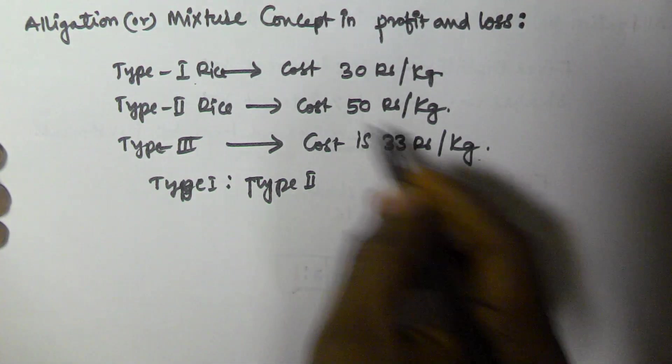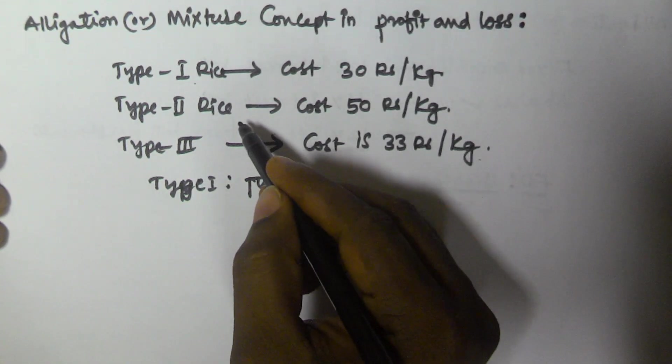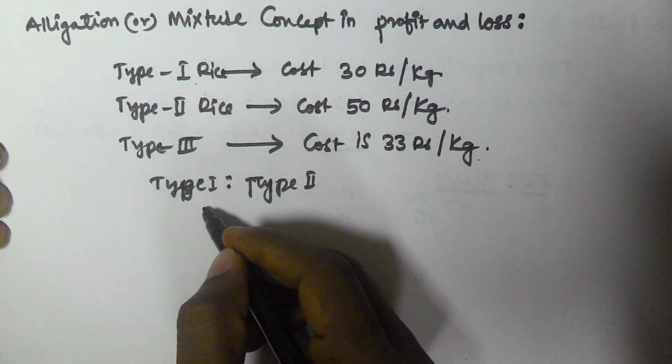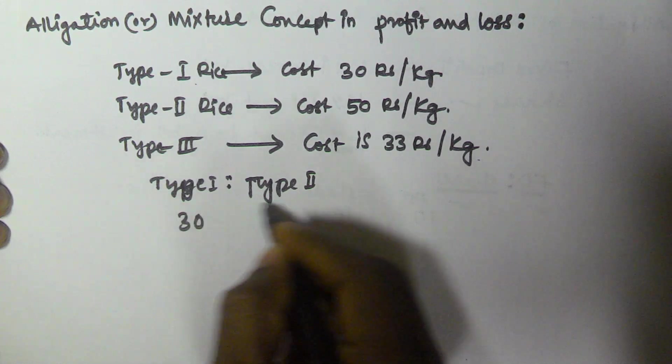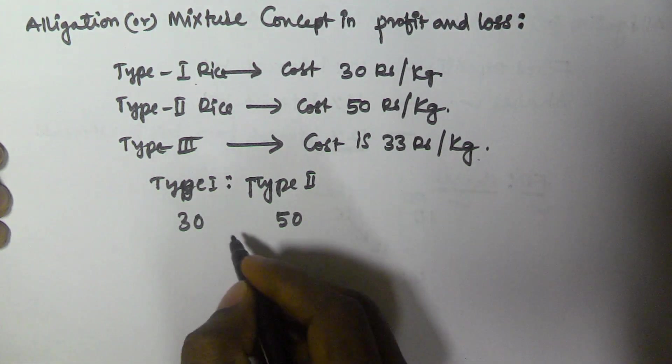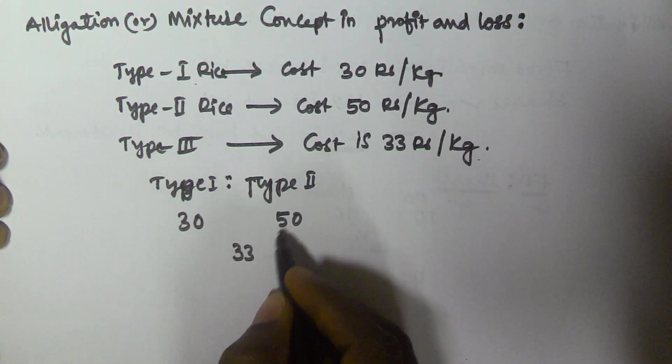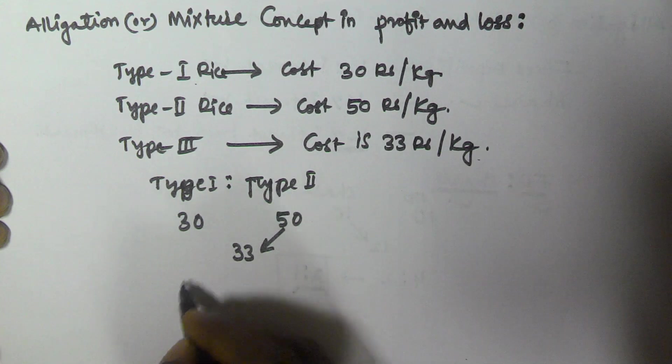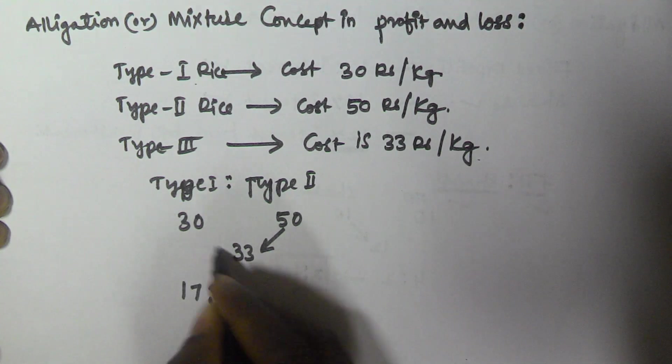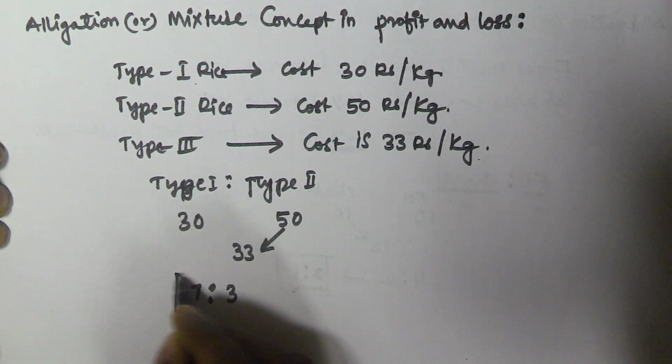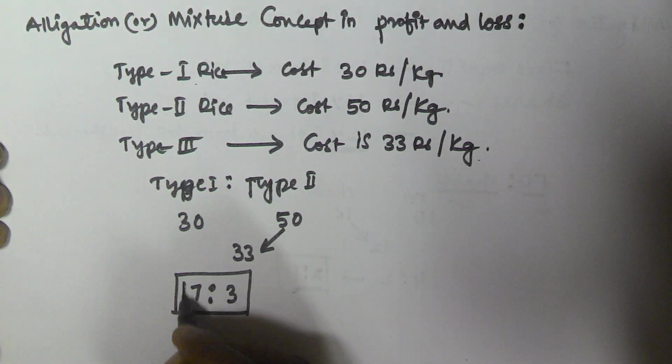The ratio: Type 1 cost is 30 rupees and Type 2 cost is 50 rupees, and the average of both is 33. So Type 1 is 50 minus 33, that is 17. And 33 minus 30, that is 3. So Type 1 and Type 2 are combined in the ratio 17 to 3.